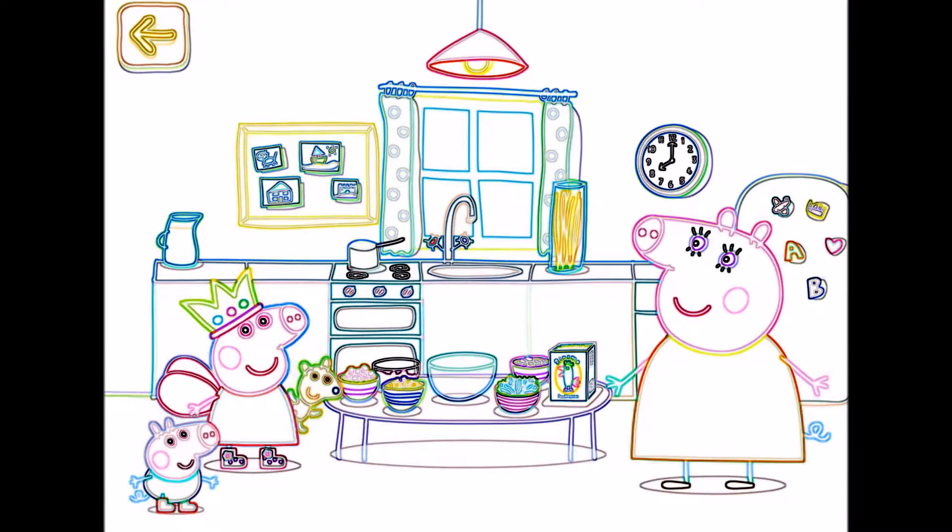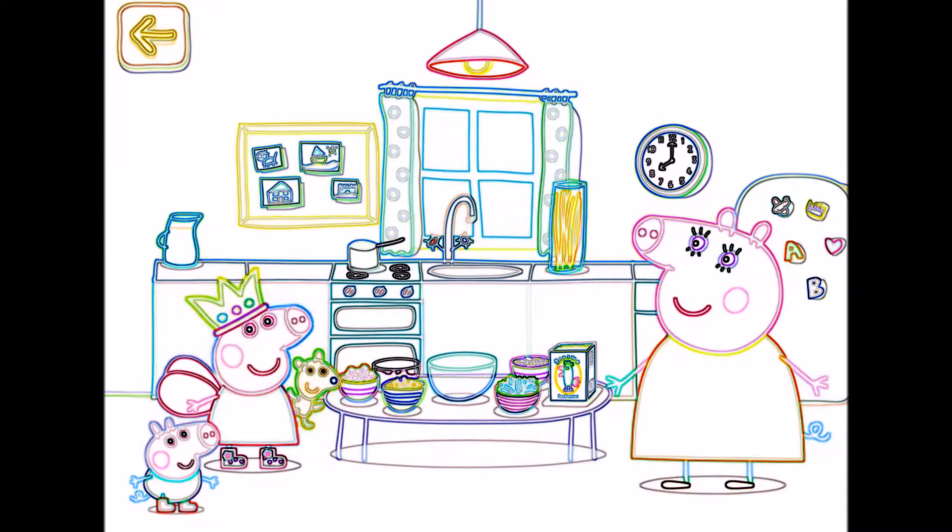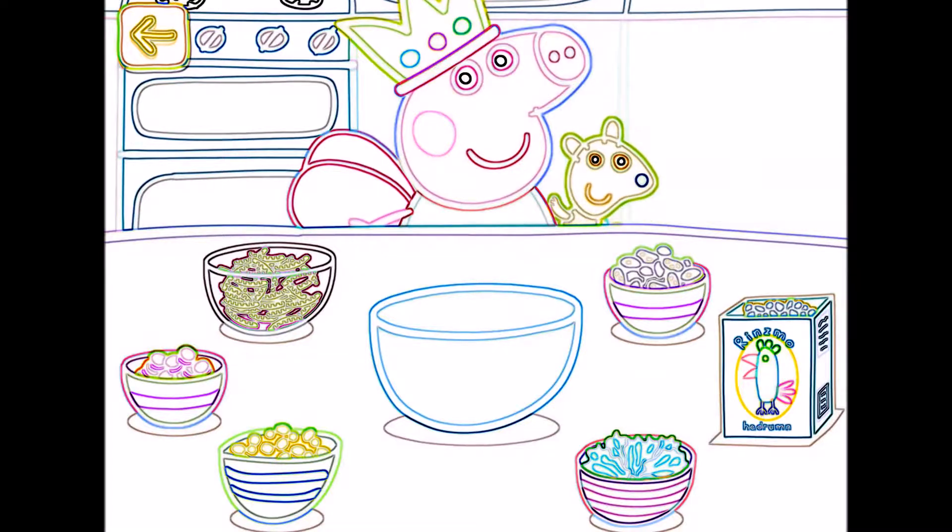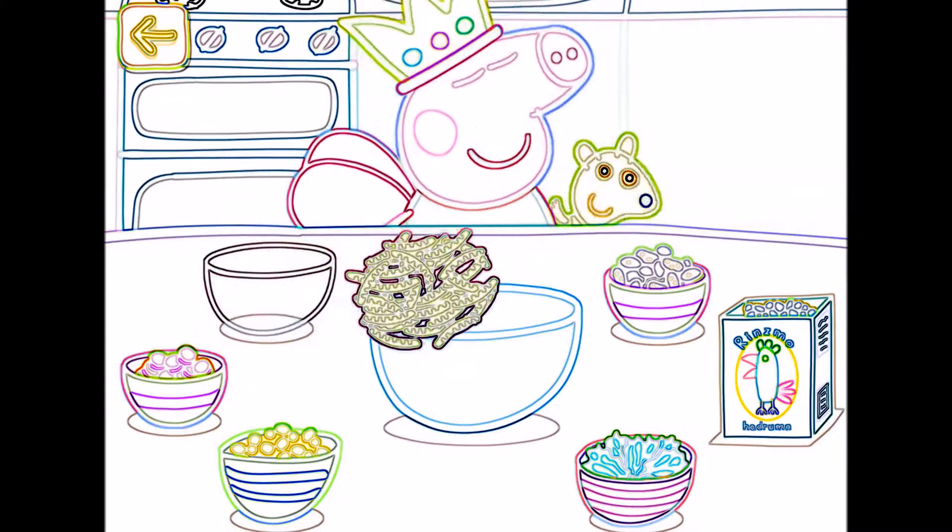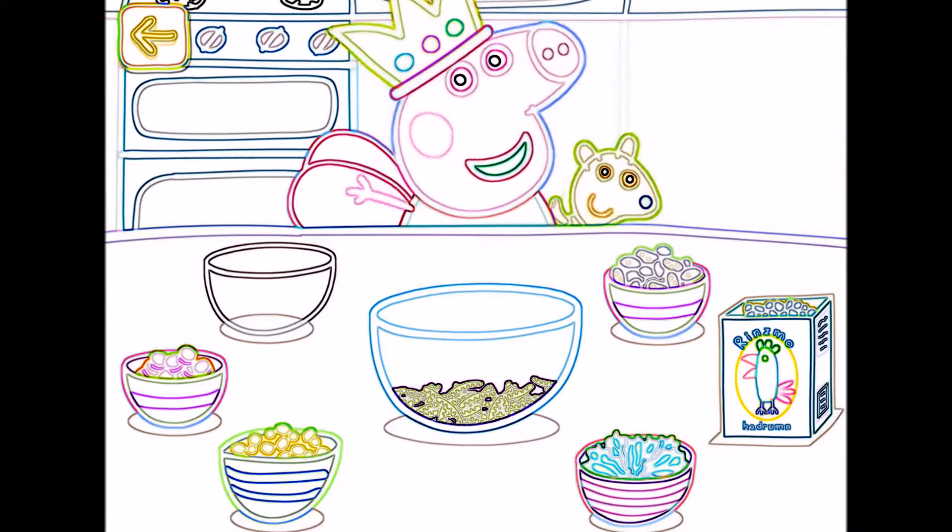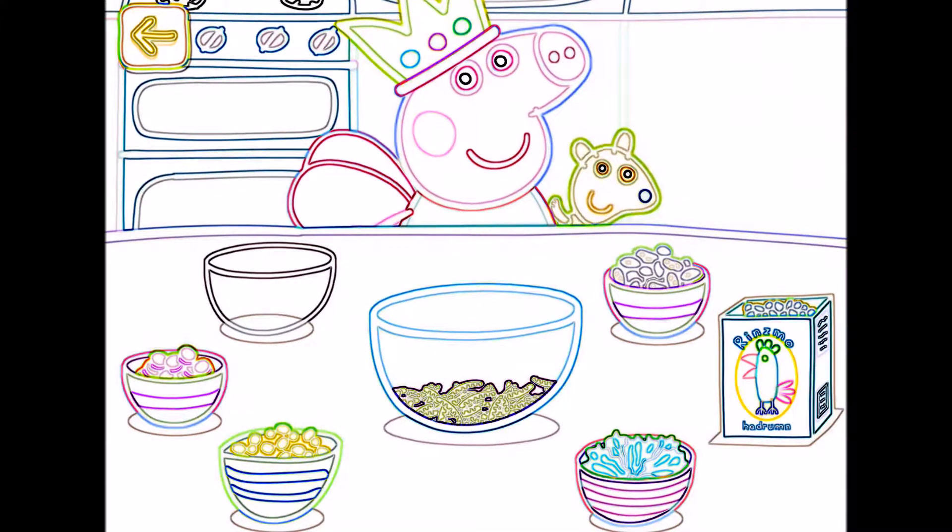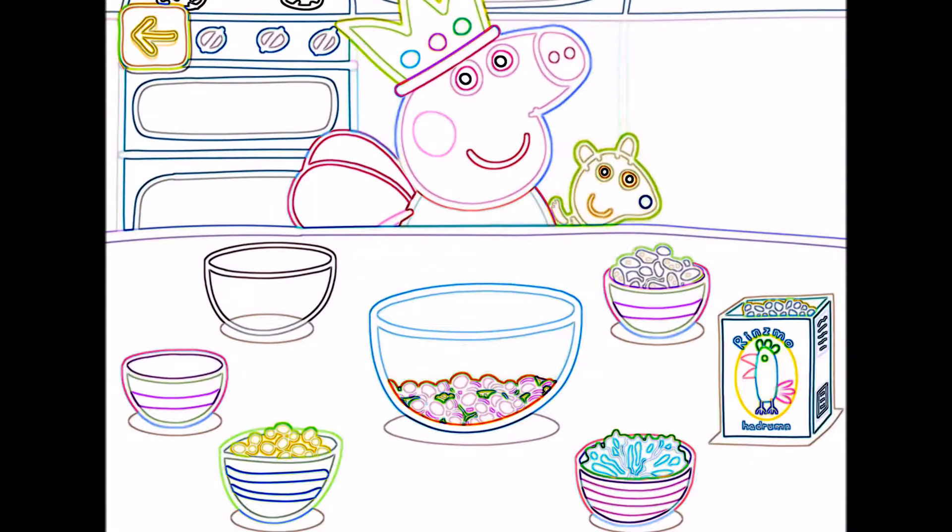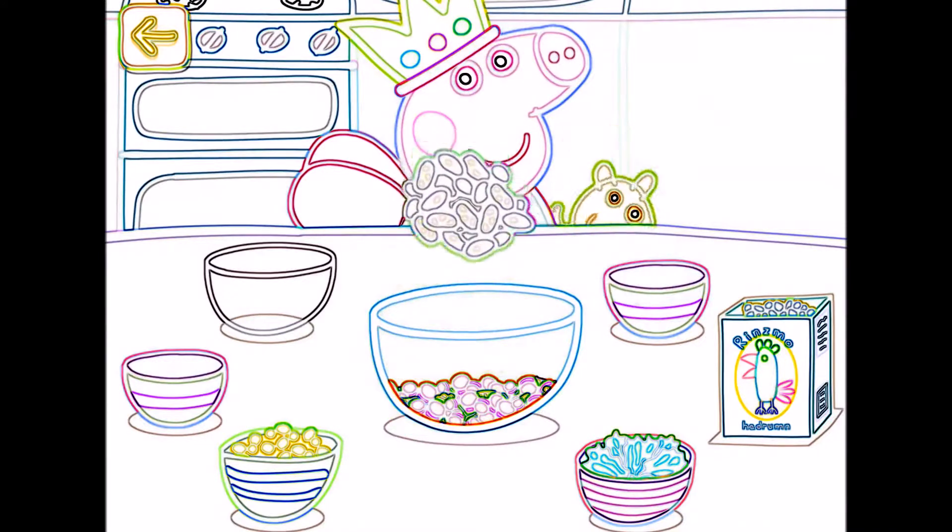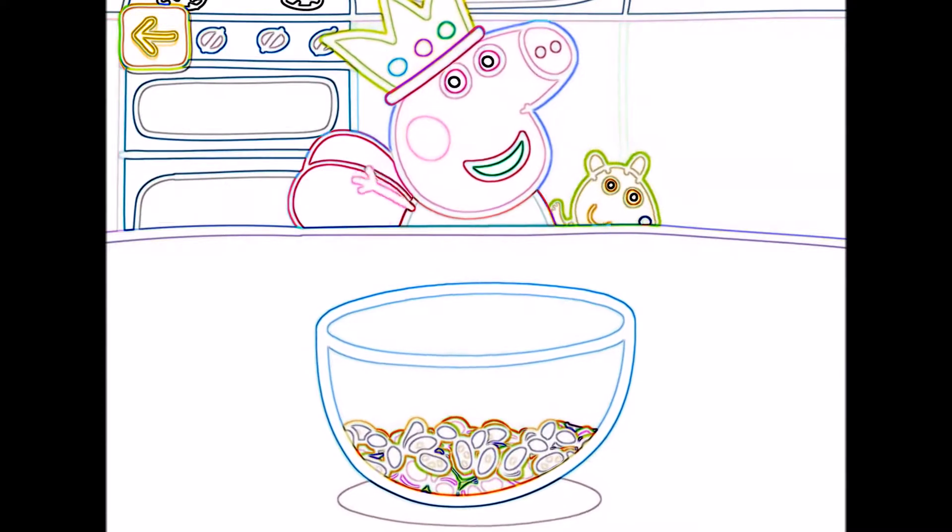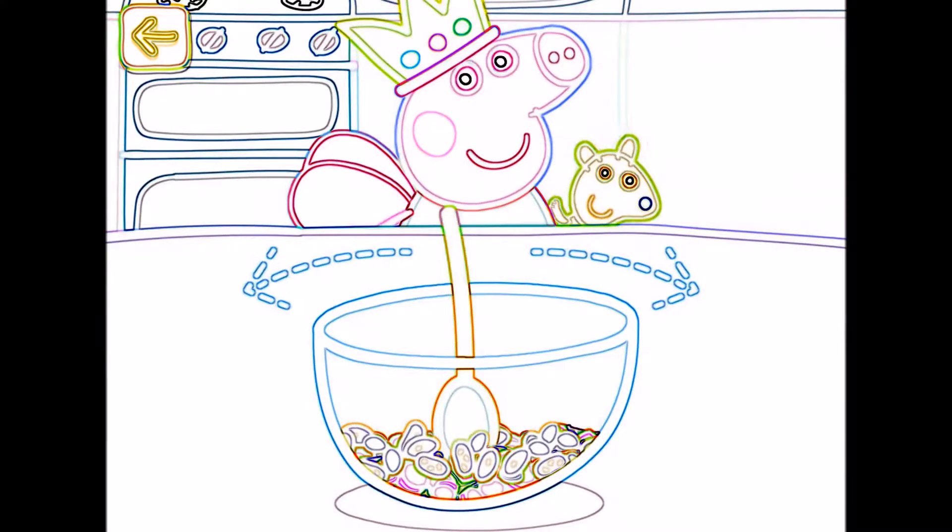Let's make some food for the ducks. Help Peppa make some food so she can go and feed the ducks. Choose some ingredients and put them into the bowl. Worms. Oats. Green leaves. Seeds. Carrots. Oats. Excellent ingredients. Now mix them together.